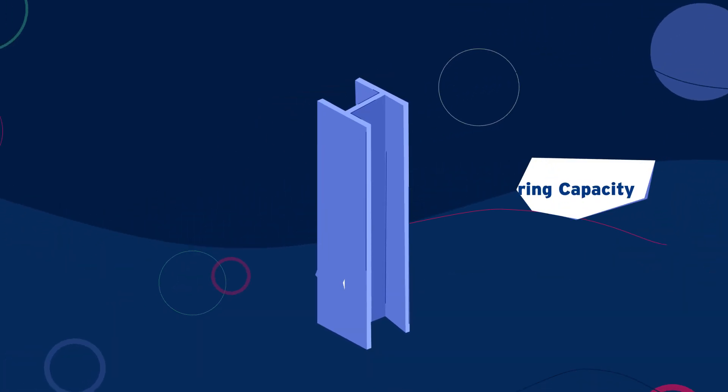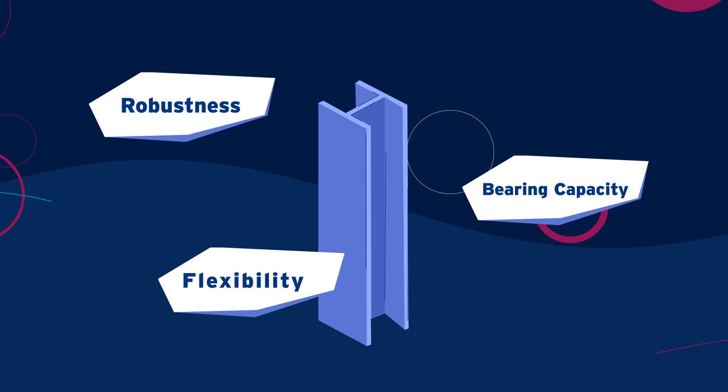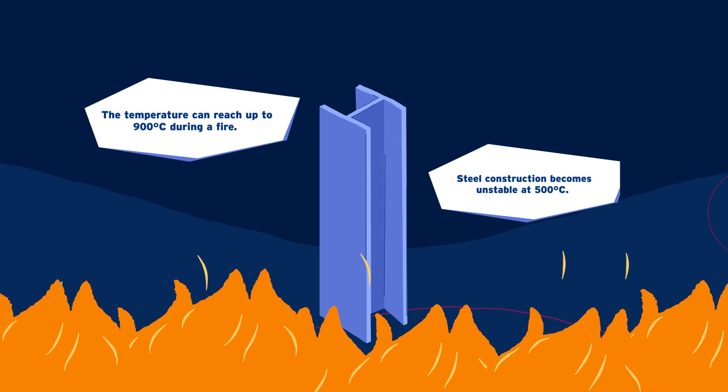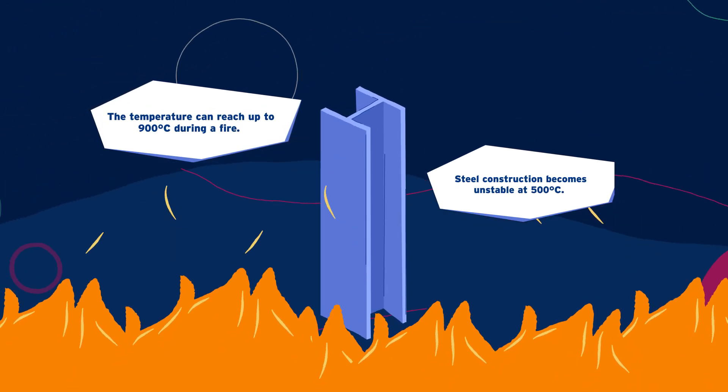Despite its advantages in expediting construction and improving robustness, steel has a major disadvantage. In the event of a fire, the load-bearing capacity of steel decreases, which can compromise the structural integrity.